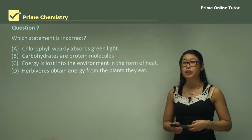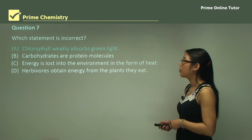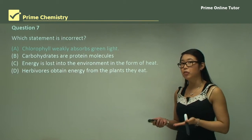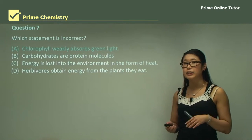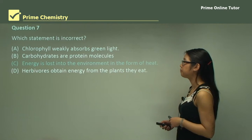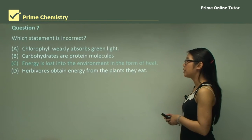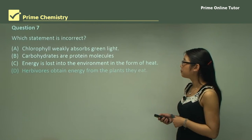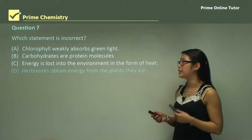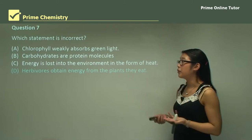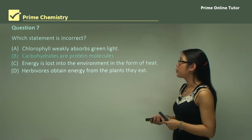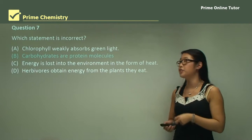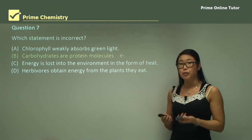Question seven: which statement is incorrect? 'Chlorophyll weakly absorbs green light' — no, because plants are green and have chlorophyll; the chlorophyll reflects green light so it's not absorbing it, making this statement correct. 'Energy is lost into the environment in the form of heat' — correct. 'Herbivores obtain energy from the plants they eat' — also correct. 'Carbohydrates are protein molecules' — no, they're sugars and stores of energy, so this is the incorrect statement, answer B.